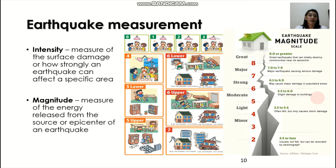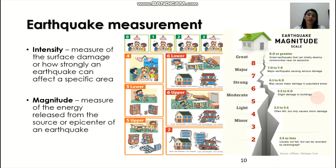Moderate earthquakes cause slight damage to buildings. Magnitude 6.1 to 6.9 earthquakes may cause major damage in populated areas — for example, we recently had a magnitude 6.4 earthquake in Davao. Magnitude 7 to 7.9 is a major earthquake causing serious damage. It has been predicted that 'the Big One' could affect NCR, though as mentioned, we cannot actually predict earthquakes. Magnitude 8 or greater are great earthquakes that can totally destroy communities near their epicenter.